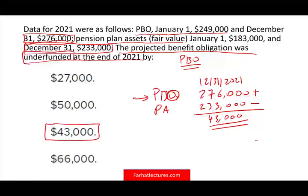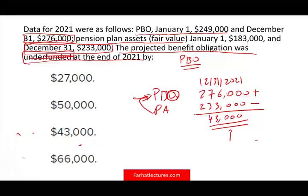The answer is $43,000. Be careful — they might give you $43,000 as both an underfunded and overfunded choice, so you still have to know it's underfunded. To find the underfunded or overfunded amount, simply take the difference between your PBO at the end of the period and your plan assets at fair value. This is a straightforward question. If you could not answer it, you need to study this topic more carefully.